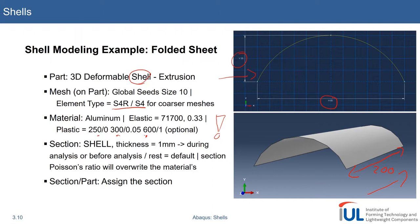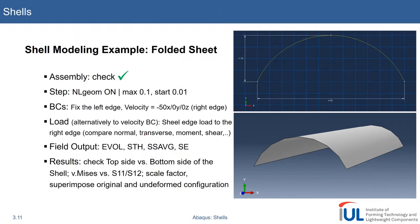We'll do some other setups, then we'll assign the section to our body, do the assembly, as you might know. We'll check NLGEOM on, have a maximum of 0.1, so that we get at least 10 frames from our simulation.